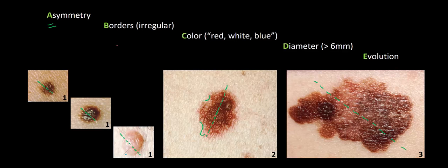Moving on, B stands for borders, and we want to make sure we don't miss irregular borders in a pigmented lesion. Looking at the malignant melanoma, notice how the borders are extremely irregular, which is in direct contrast to the well-demarcated borders seen in all types of benign nevi. The dysplastic nevus in the center is again somewhere in between — the borders are fairly regular but ever so slightly more irregular than those of the benign nevi.